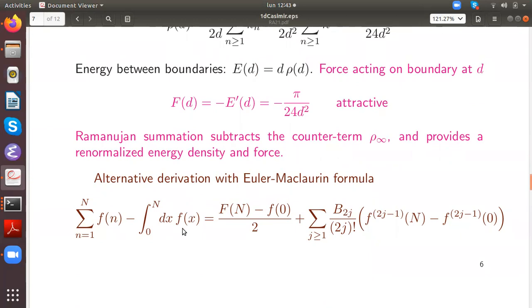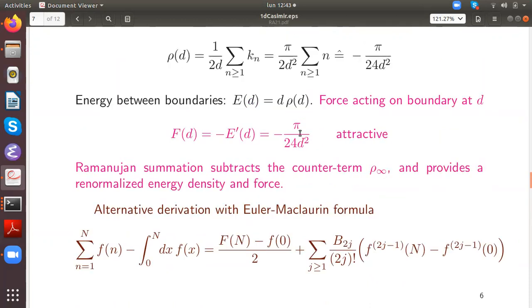So Ramanujan summation actually subtracts the counter term, which is the infinite density that we have without such boundaries. And then it remains a finite difference, which is exactly the renormalized term, and thus it provides sensible values for the energy density and the force. An alternative way to derive it is to use the Euler-Maclaurin formula, which exactly provides an expansion of the difference between a sum and an integral, and it leads to the same results that we obtained here with the Ramanujan summation.